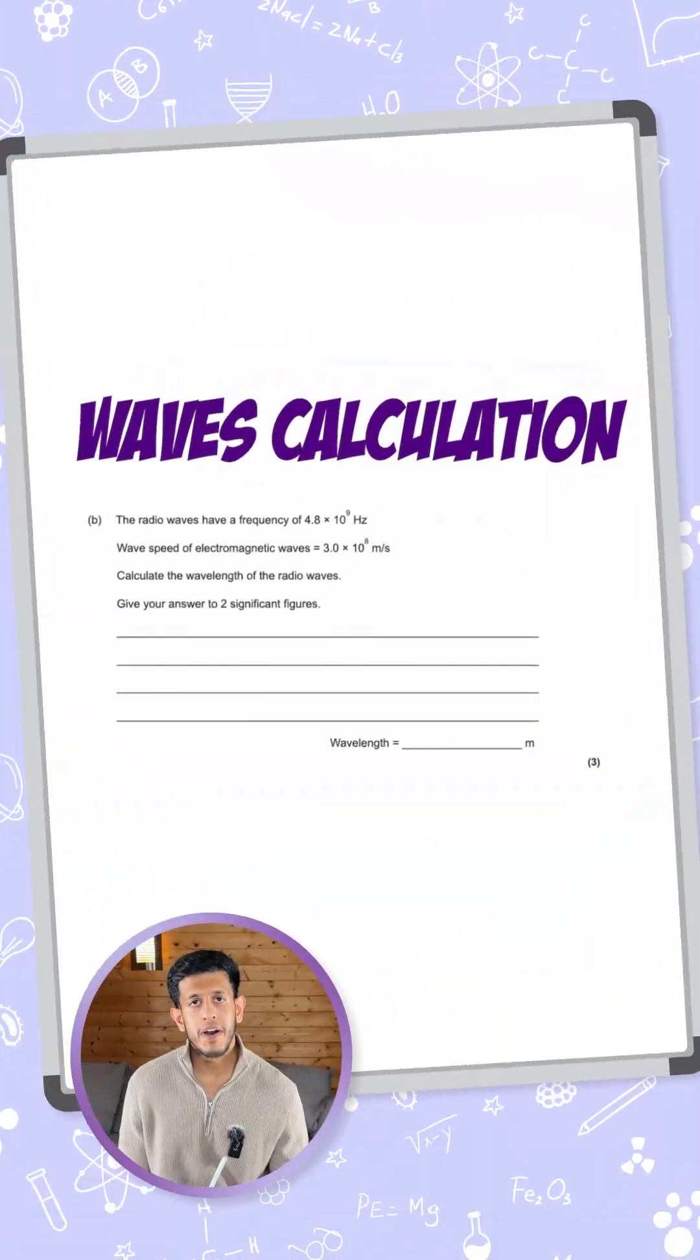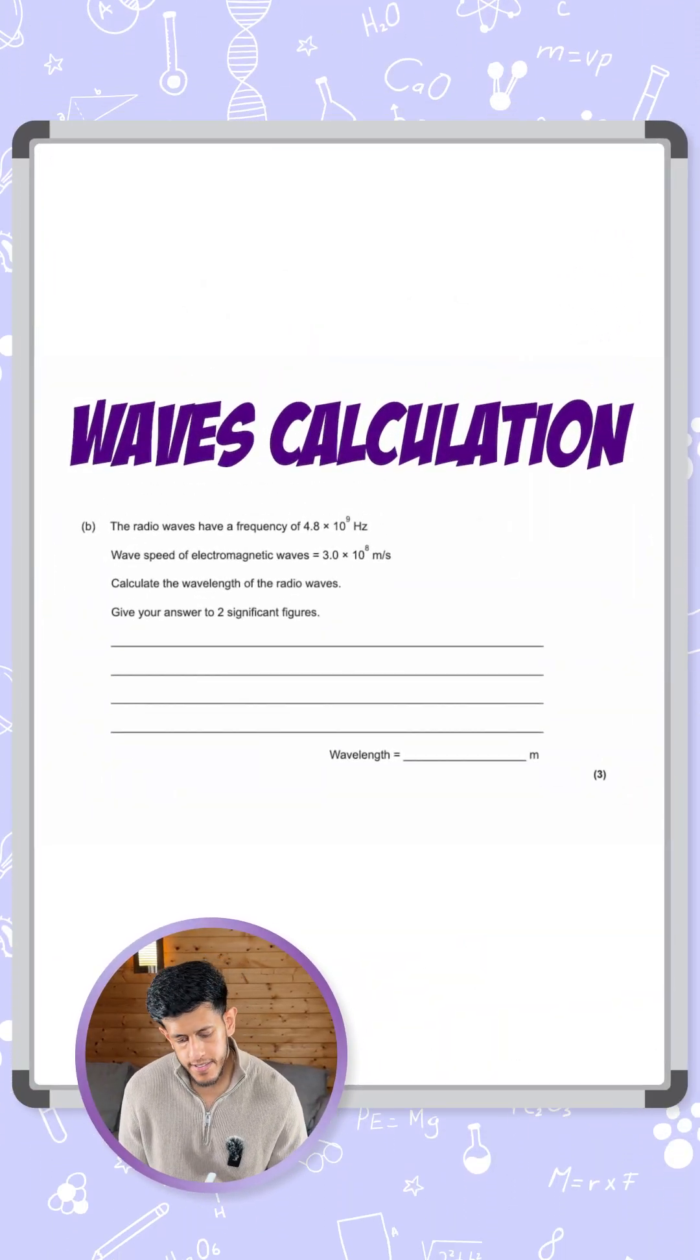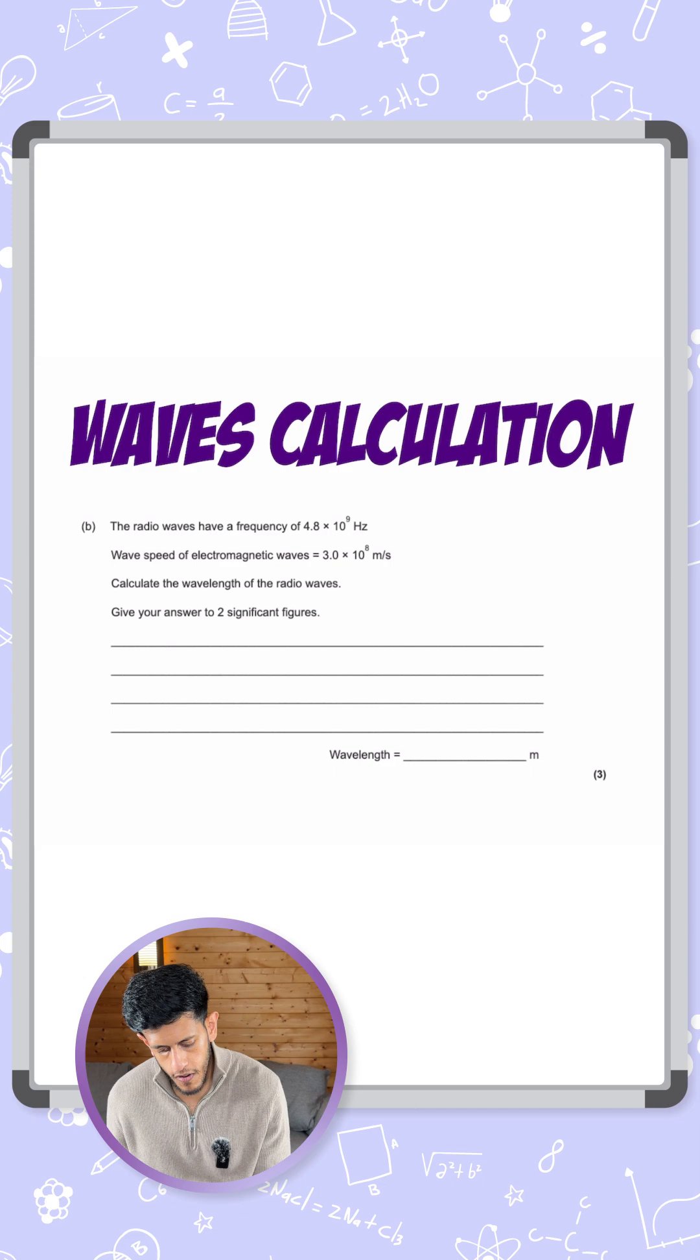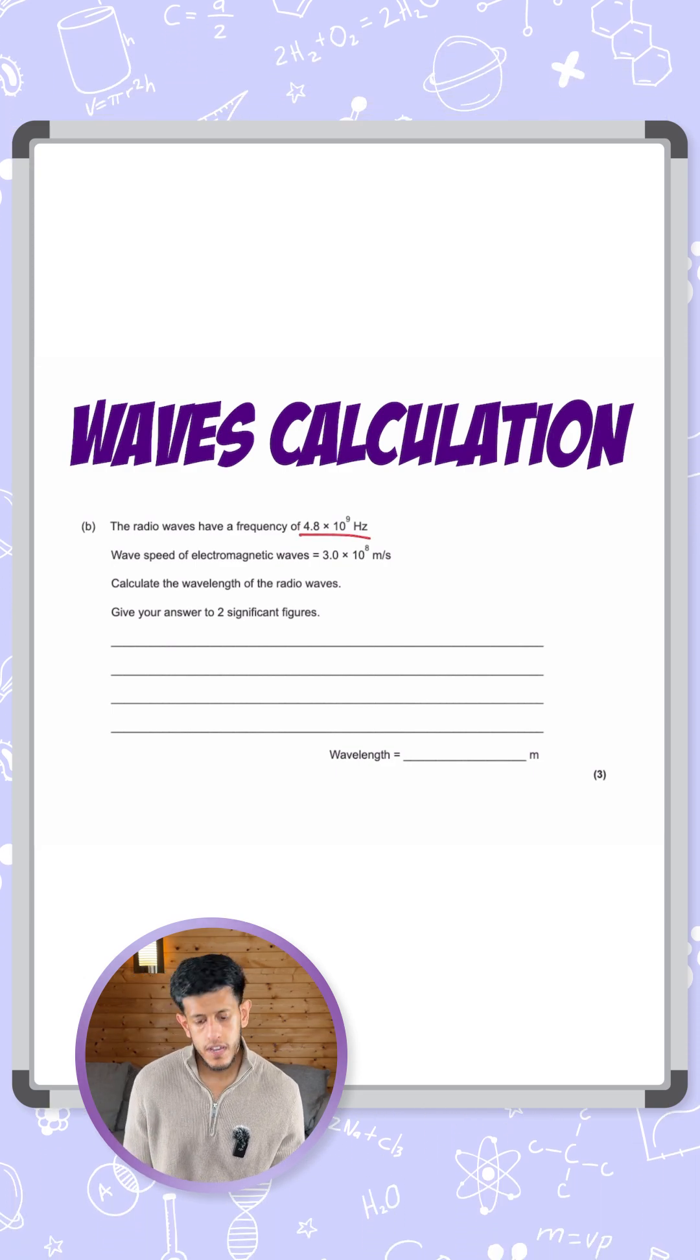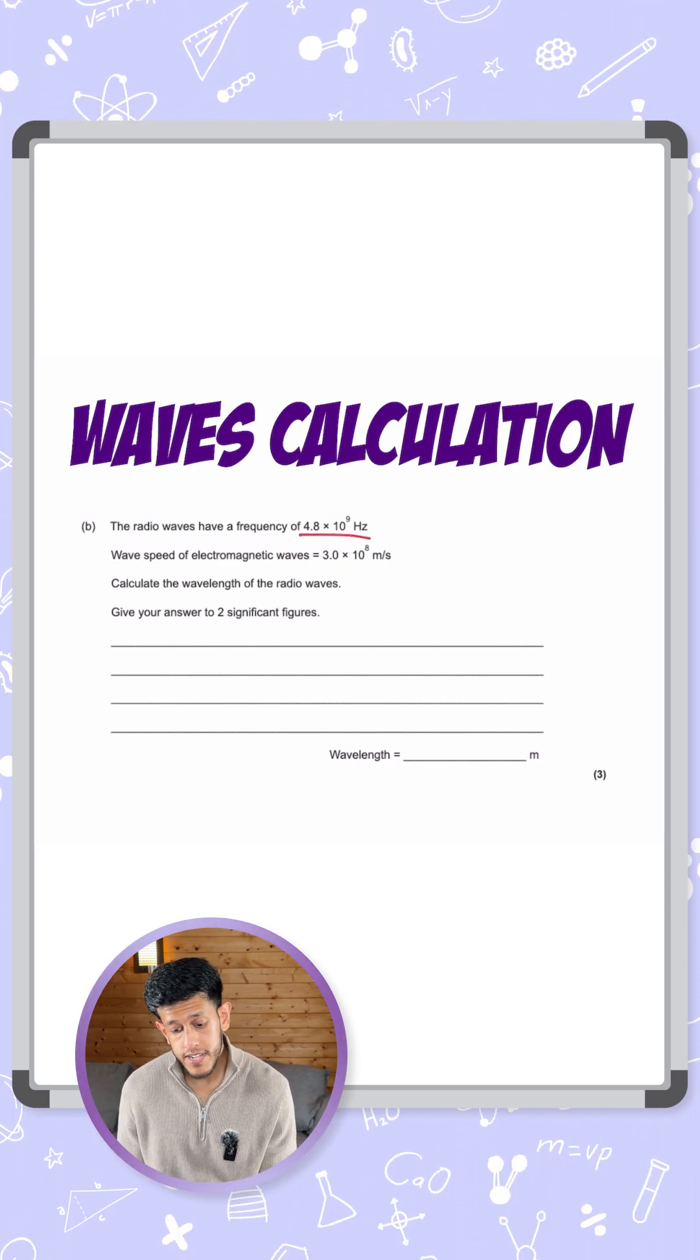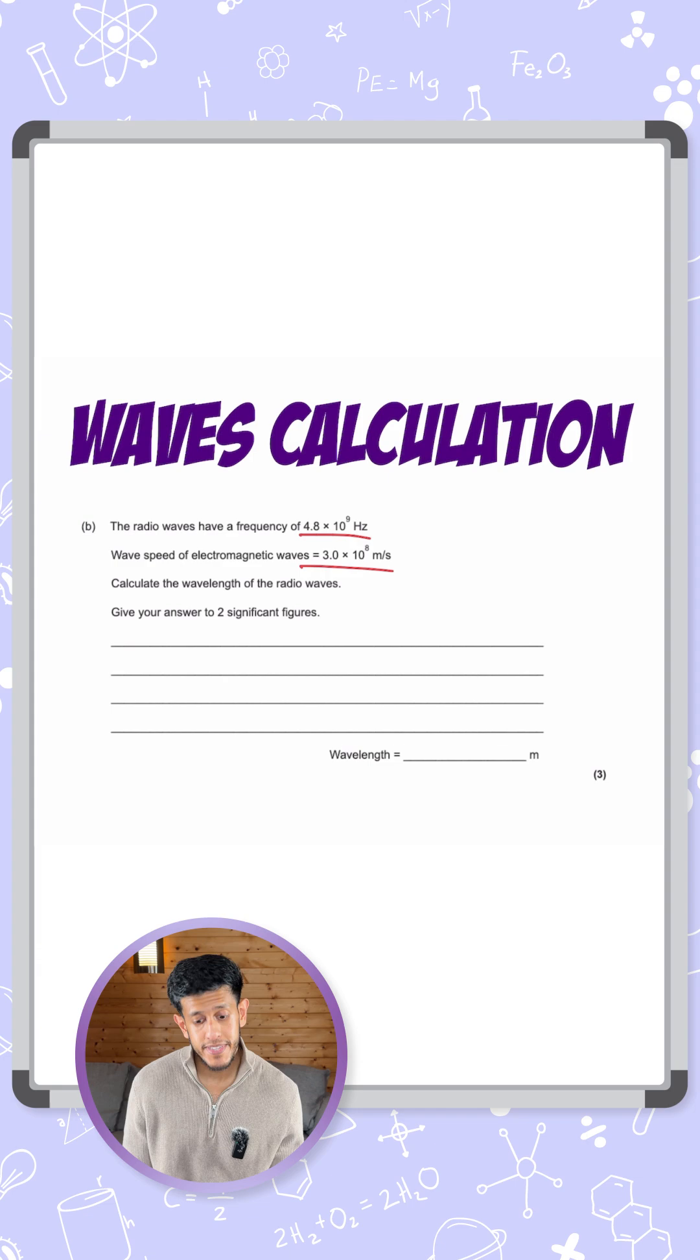All right, so let's take a look at this question talking about the equation for waves. It says the radio waves have a frequency of 4.8 times 10 to the 9 hertz, and the wave speed of electromagnetic waves is 3 times 10 to the 8 meters per second.